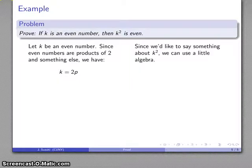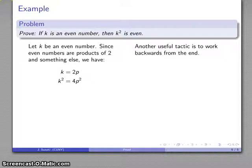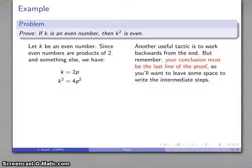And keep in mind that where I want to end up, I'd like to say something about k squared. And because of that, I can use a little bit of algebra. There's k squared. Well, I don't quite know what I want to do, but I do know that I want to end up with the statement k squared is even. So another useful tactic in building a proof is to work backwards from the end. Now we have to be a little bit careful with this. Remember that the conclusion is the last line of the proof.